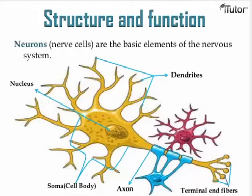The Nervous System — this is for Grade 9, Chapter 20 in your book, Section 1. So we're talking about the Nervous System.